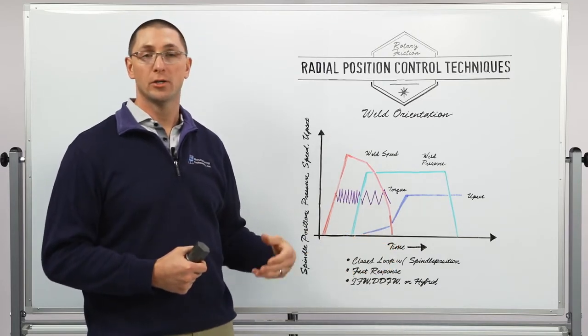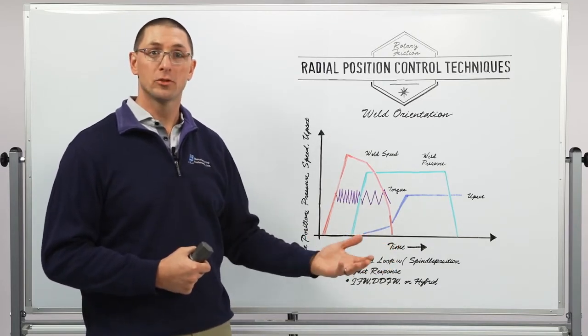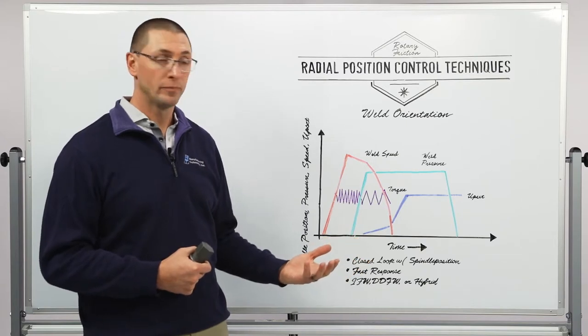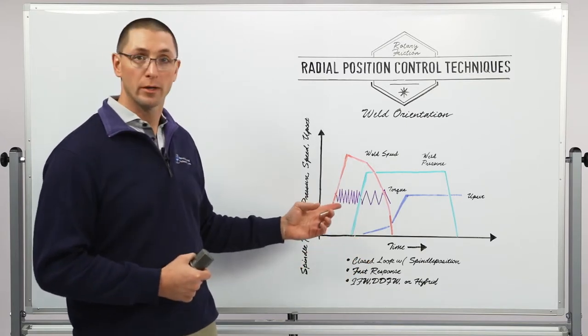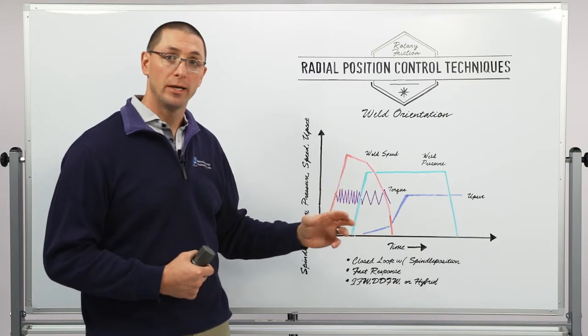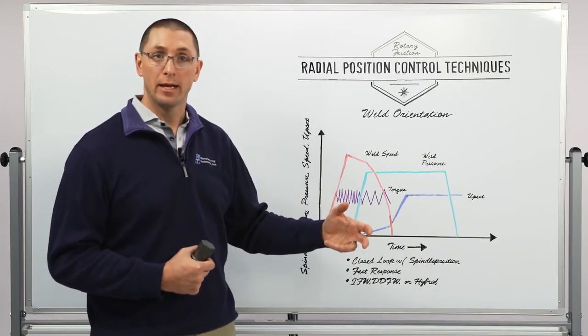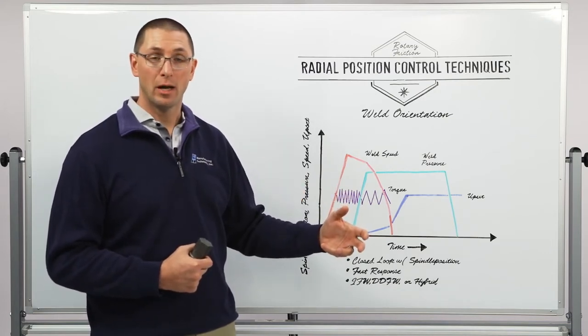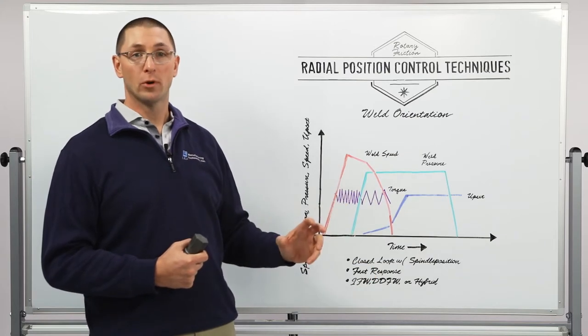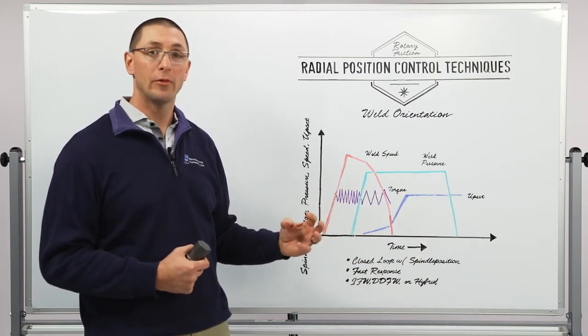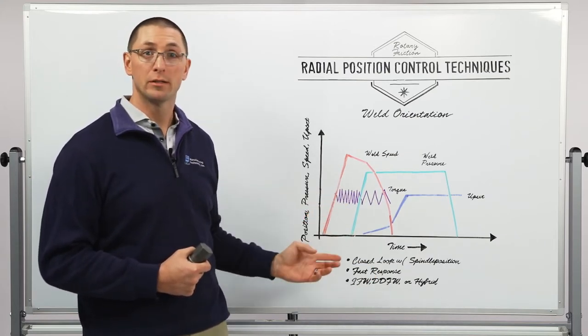And we use that profile to generate an error signal for future welds so that we can close the loop. We close the loop using torque. So by adding torque we can catch up with a spindle position that might be lagging behind. Or we can use negative torque or braking in order to slow down that spindle position relative to the profile.